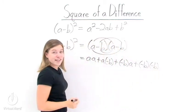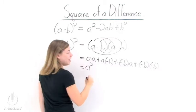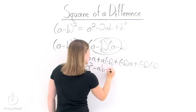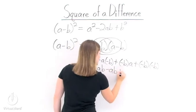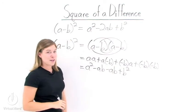Now we just need to simplify. We'll have a squared. a times a negative b is negative ab. Negative b times a is another negative ab. And then negative b times negative b is a positive b squared.